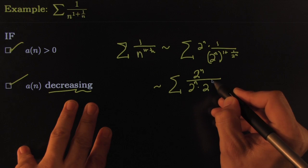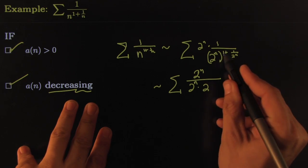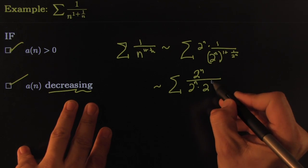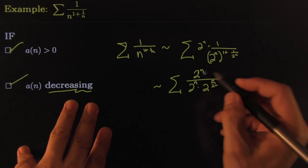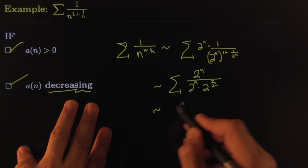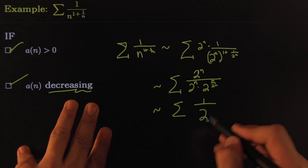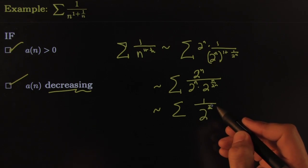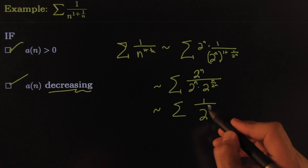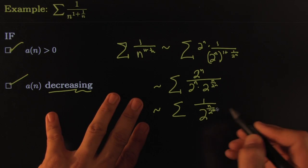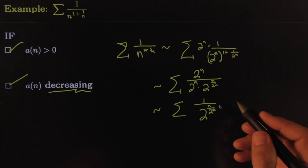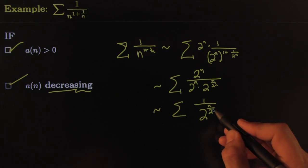You have to distribute this, so this would be 2 to the n and over 2 to the n, right? This cancels, and so this becomes the same as 1 over 2 to the... sorry, that would be n over 2 to the n. What's up buddy, you're messing up my concentration, buddy.